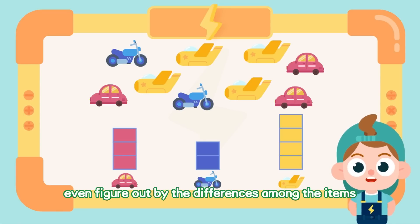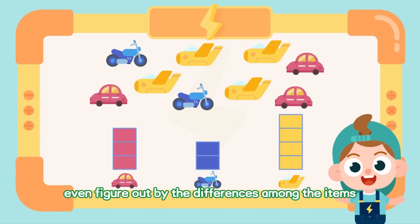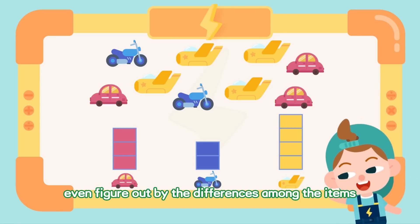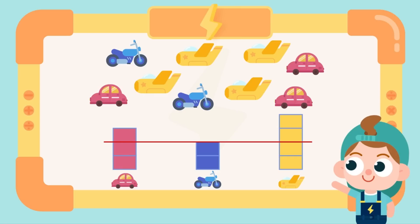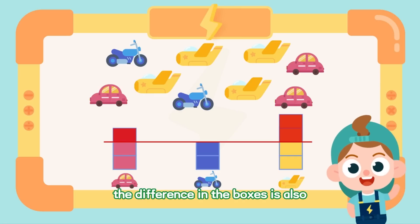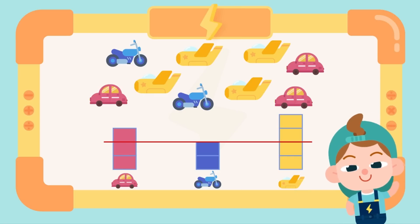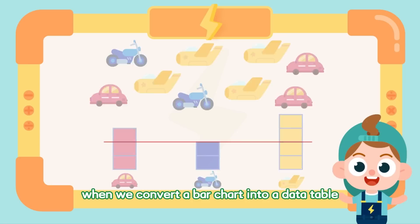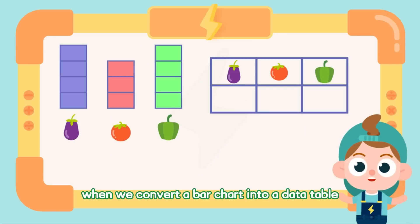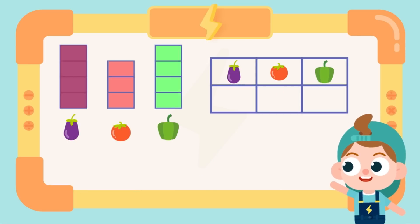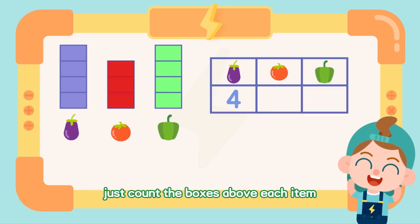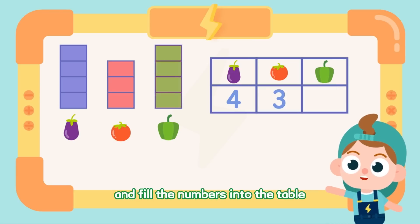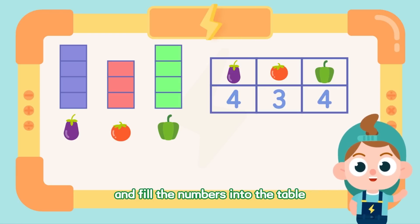We can even figure out the differences among items using a bar chart. The difference in the boxes is also the difference in the numbers. When we convert a bar chart into a data table, just count the boxes above each item and fill the numbers into the table.